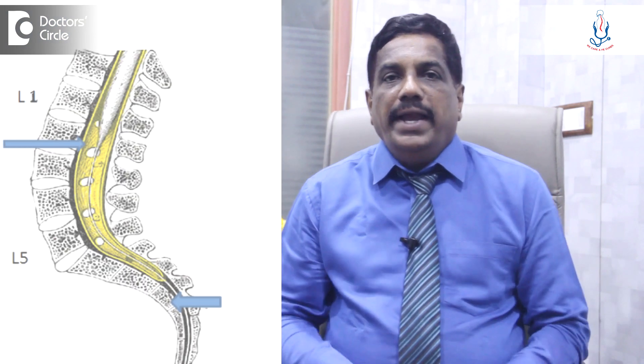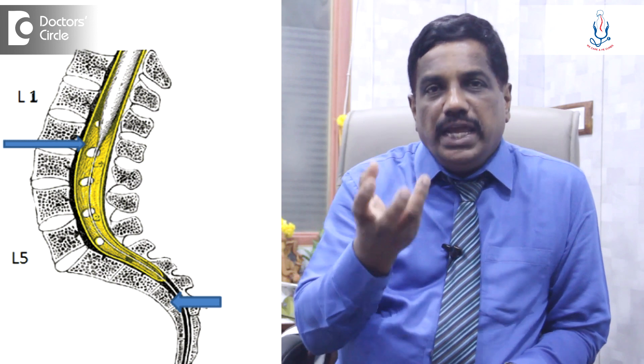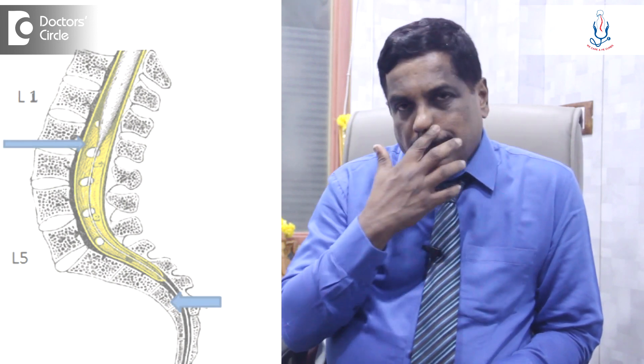Tethered cord means it is a developmental anomaly. Usually, the spinal cord ends at the lower border of L1. From there, it is only the roots — there is no cord below.